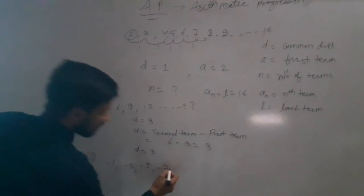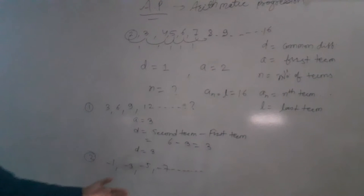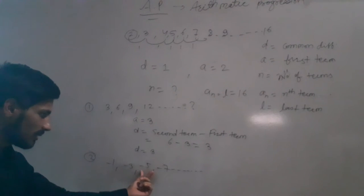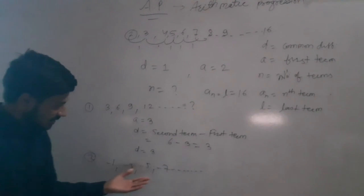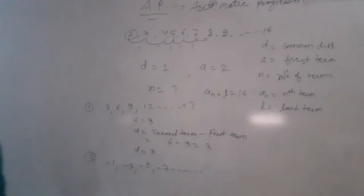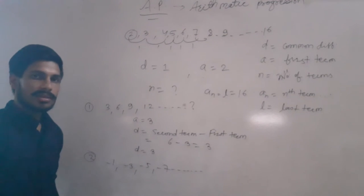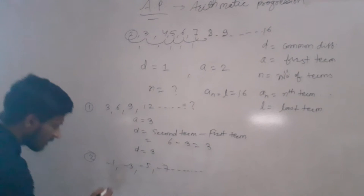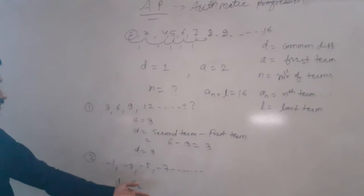Here is another question. The progression goes: minus 1, minus 3, minus 5, minus 7. We have to check whether this is an Arithmetic Progression or not. We check by seeing if the common difference is the same throughout. If it is, then we can say this is an AP.